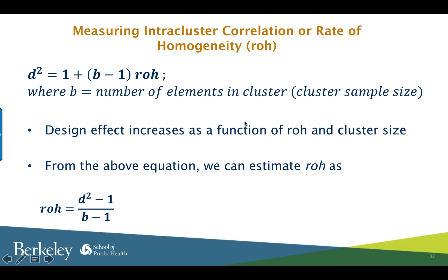How do you calculate rho for a study you are going to conduct? Rho becomes available only after the study is conducted — after the data is generated and you know the outcome. Therefore, to calculate design effect, you need to use rho calculated from a previous study in the same or a similar population. You can then plug in that value of rho to get the design effect for your new study. Based on the design effect, you can adjust your sample size. We will see how to adjust sample size based on design effect later when we study power and sample size.